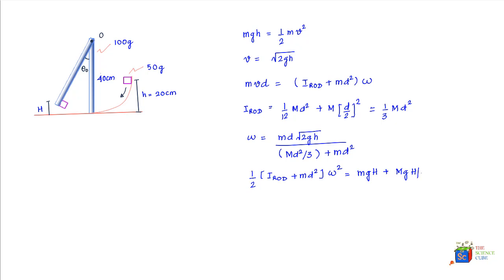To clarify: the center of mass of the rod goes up by h/2 if the bottom of the rod goes up by h. The kinetic energy of the block-rod system at its lowest point is equated with the potential energy at height h, where mgh is the potential energy of the block and Mgh/2 is the potential energy of the rod. From trigonometry, h equals d·(1 − cos θ).